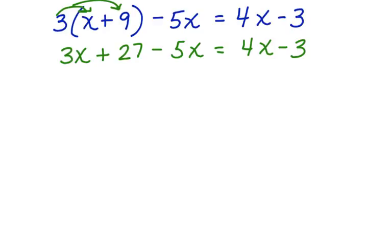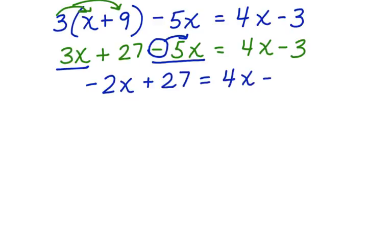Now, on the left side of the equation, we can combine like terms. We have 3x minus 5x. Notice that this sign goes with the term that's after it. That leaves us with negative 2x plus 27 equals 4x minus 3.